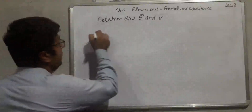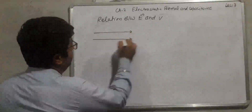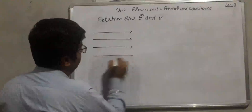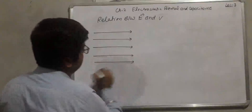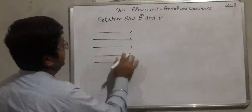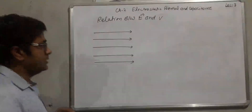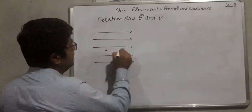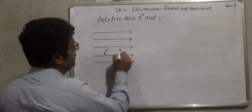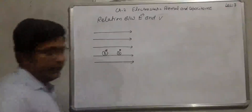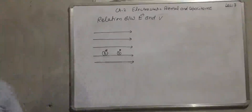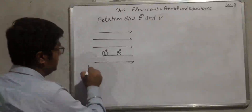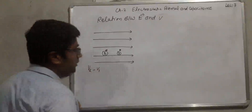We are assuming a uniform electric field, meaning equal spacing between electric field lines. We are assuming 2 points, 1 and 2, and we need to find out the potential difference V2 minus V1.